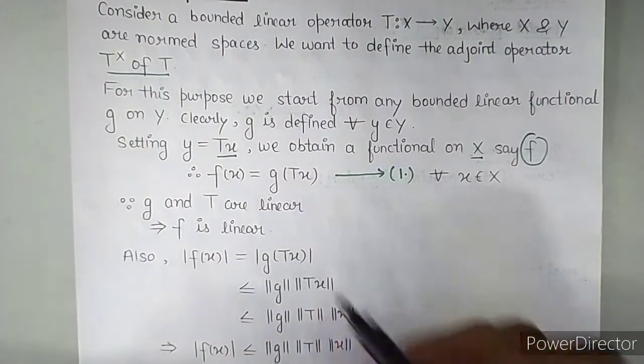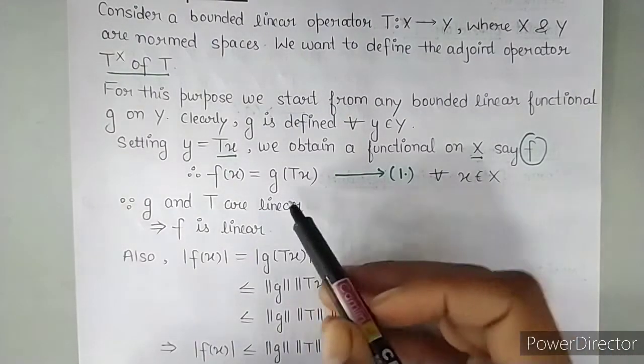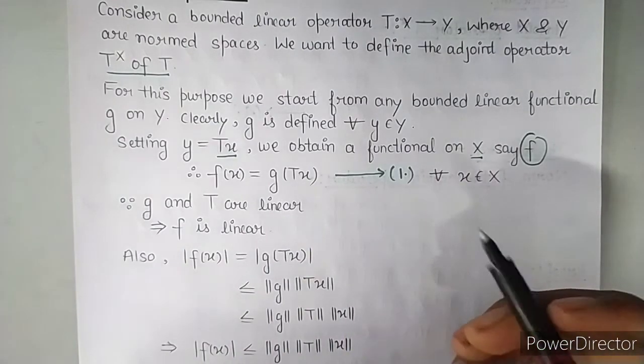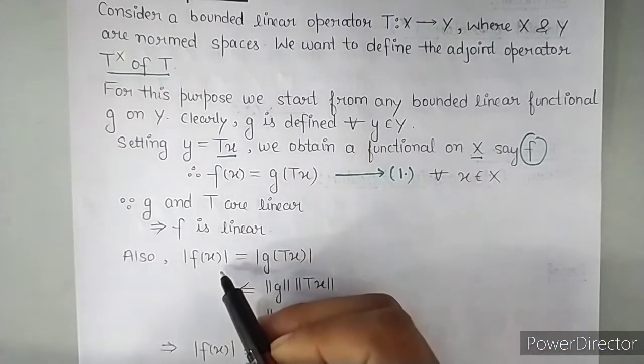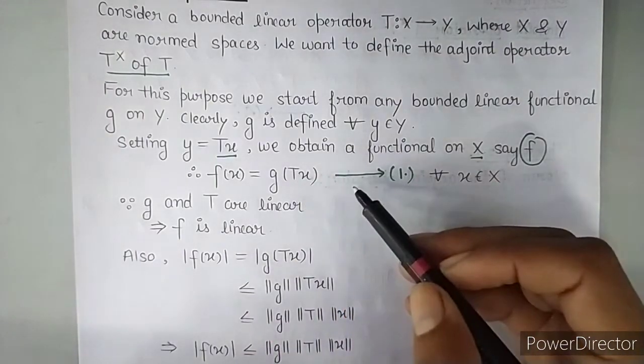Now since G and T are linear, and F is made from the composition of these two, so F is also linear. Also, now mod of F of X will be, since F of X is G of TX, so we took the mod of G of TX.